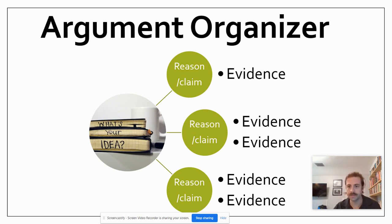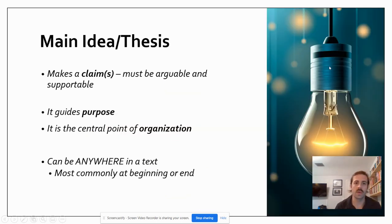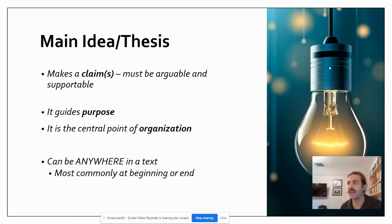We have our main idea as our focal point, and then off of that main idea we have our reasons or our claims that we're going to state — that make this thing true or appear like it is a good idea. Attached to each one of those claims is going to be a piece of evidence, some support that really makes the claim seem valid, and in turn makes our main idea seem valid. So the main idea, also known as the thesis, is the central point of any argument.